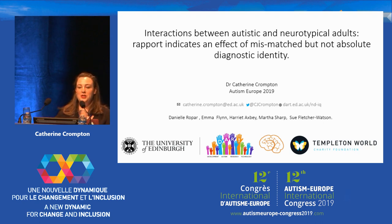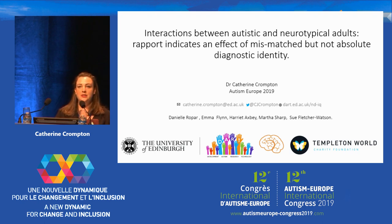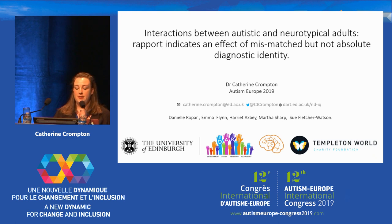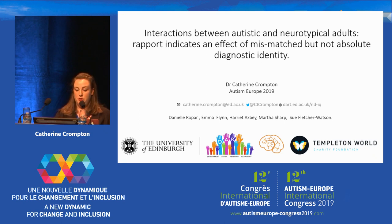Hi, thank you all so much for coming along to join me this morning. I am here to talk about interactional rapport and the differences in rapport between autistic and neurotypical people. This is a piece of experimental research which is part of a larger project designed to explore autistic social behaviors. With this project we were interested in whether for an autistic person interaction was different depending on whether they were also interacting with another autistic person or with someone who is neurotypical.